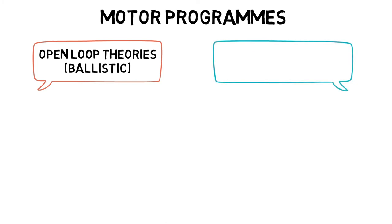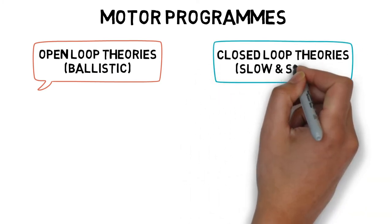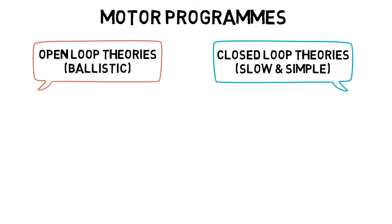Whereas closed-loop theories work for slow and simple movements that provide continuous intrinsic feedback, such as a snowboarder traveling down a slope.